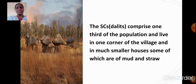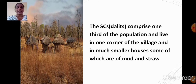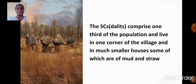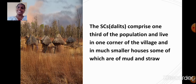The scheduled caste people, that is Dalits, comprise one third of the population and live in one corner of the village in much smaller houses, some of which are made of mud and straw. Remember the difference: upper caste houses are quite large, made of brick plastered with cement, whereas scheduled caste houses are small and made of mud and straw.